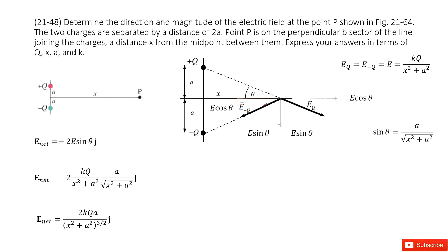You can see that E_q and E_negative_q are vectors. So when we want to find the electric field at this point, we need to do vector addition for these two vectors. So we can project E_q into its x-component and y-component. The x-component is E cosine theta, and the y-component is E sine theta.